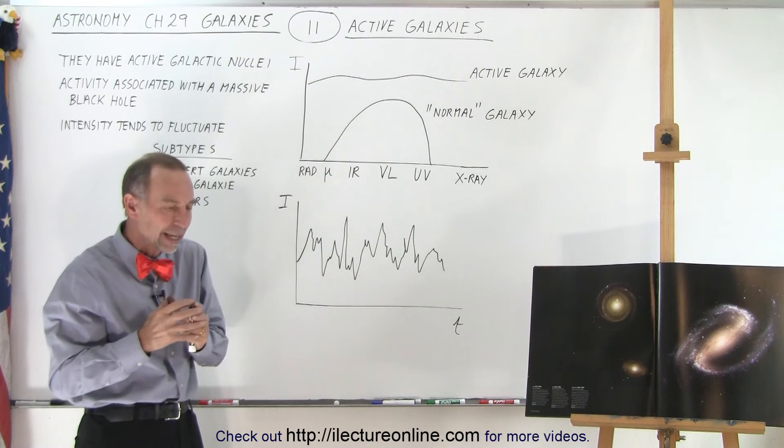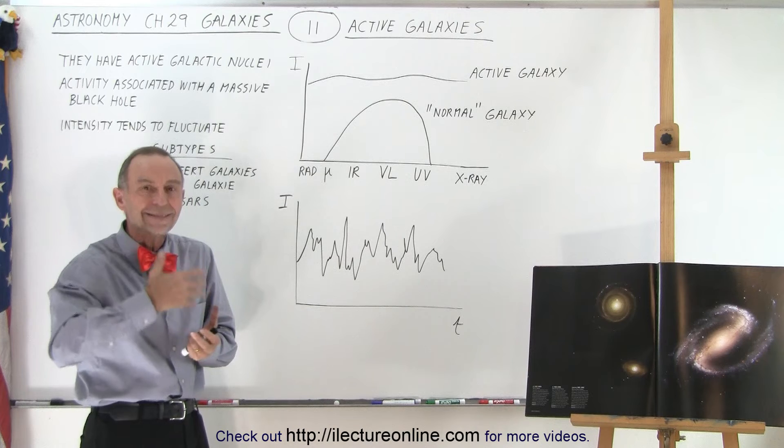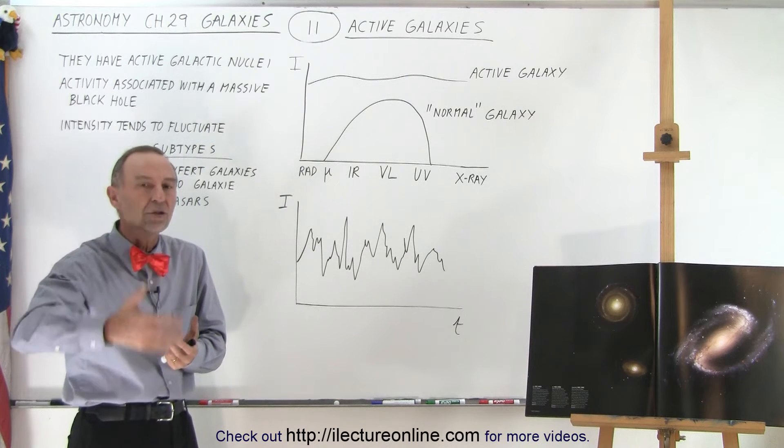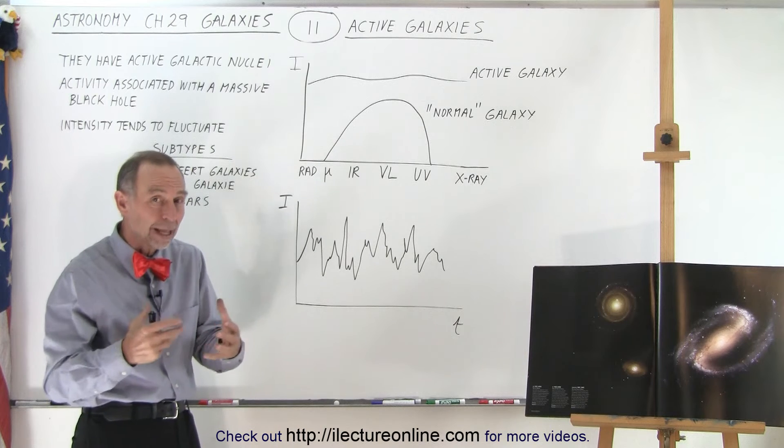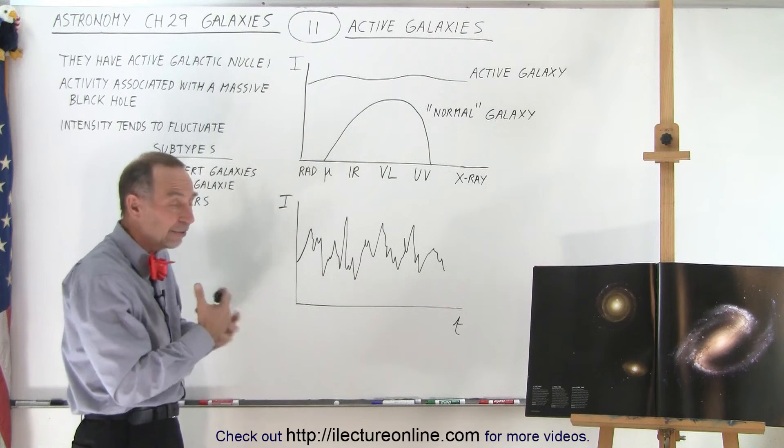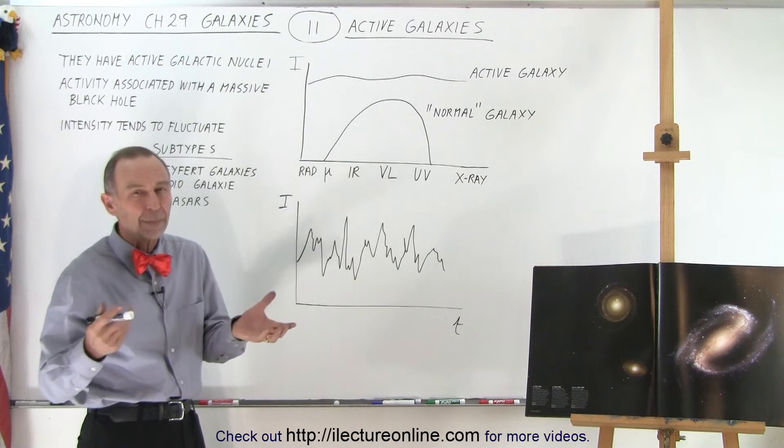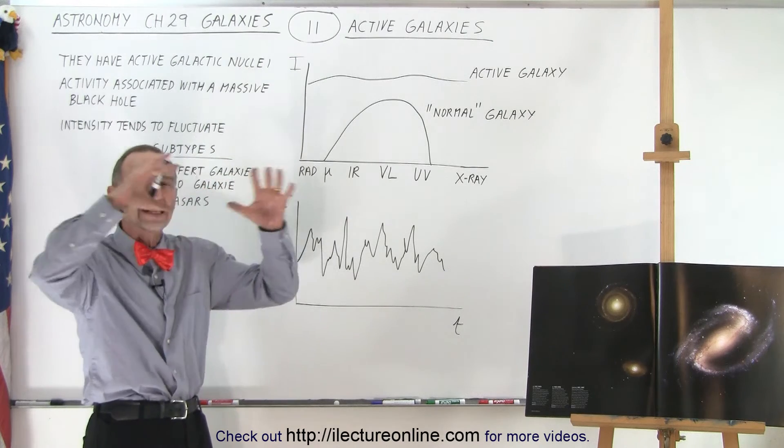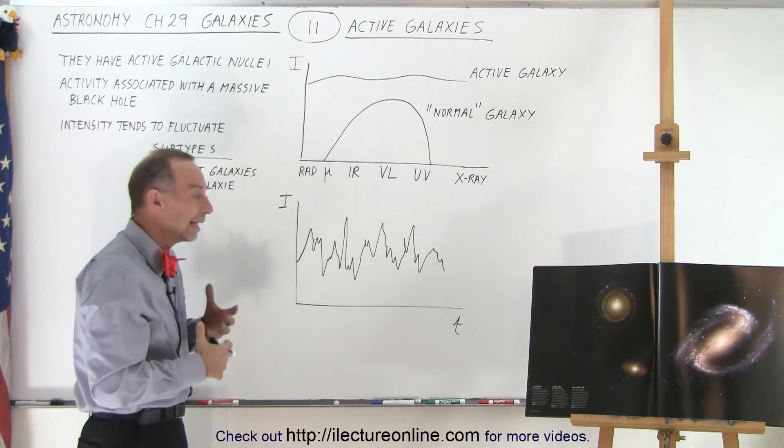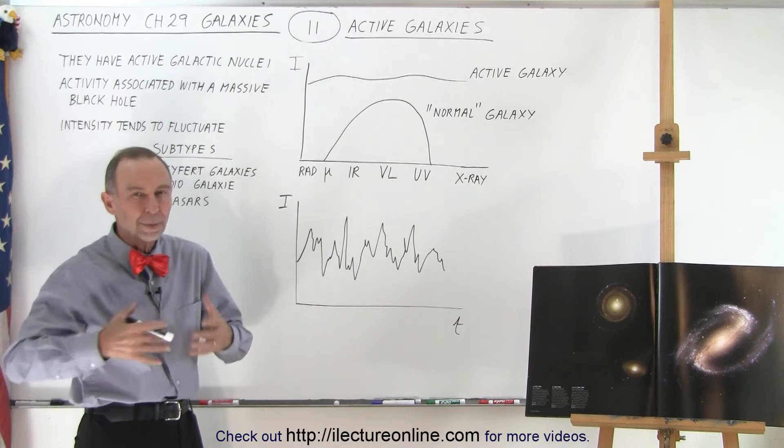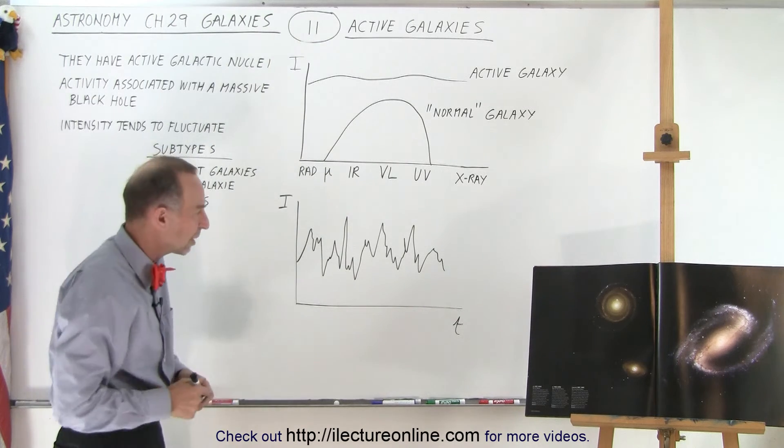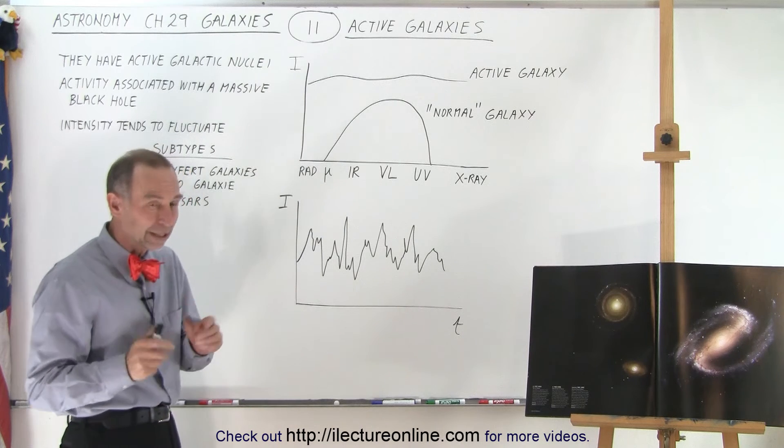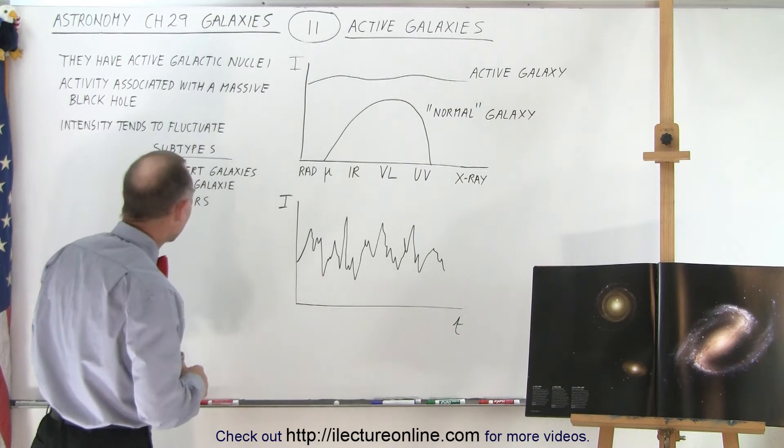This means that whatever is happening at the center of the galaxy tends to be not a steady state condition but a continuously varying condition. That happens a lot when you have an active black hole at the center. The amount of energy released depends not on the black hole itself but on the activity around it, as matter gets pulled in and accretion discs are being generated.